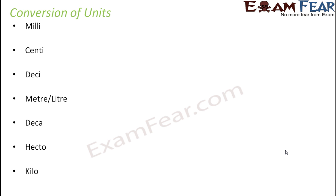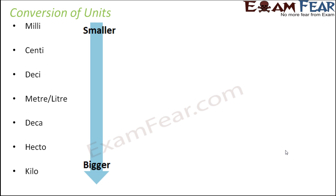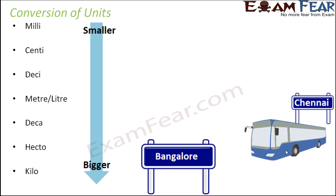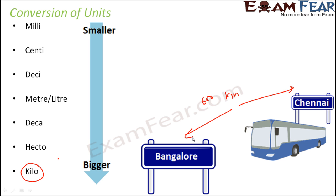There are various units available to measure any quantity — distance, weight, or volume. Within these units we have smaller units to define smaller quantities and larger units to define larger quantities. For example, the distance between Bangalore and Chennai is huge — it's not the distance between your house and your school. Since we are measuring a larger distance, we use the bigger unit, kilometre, and say the distance is approximately 600 kilometres.